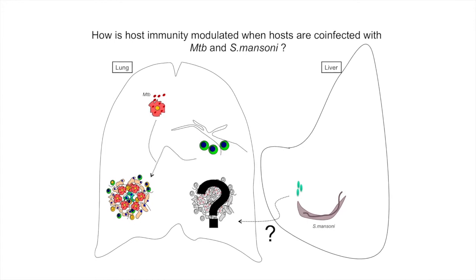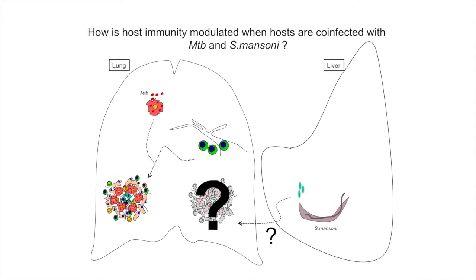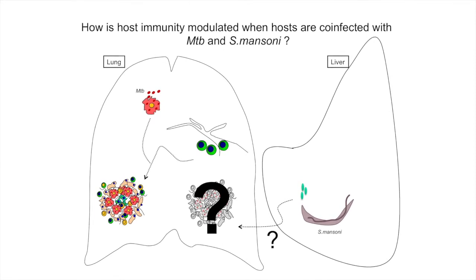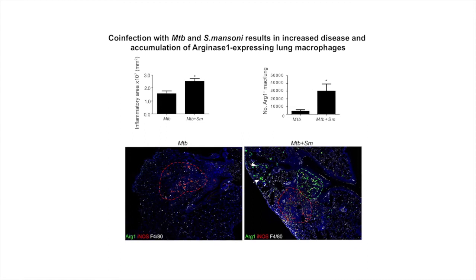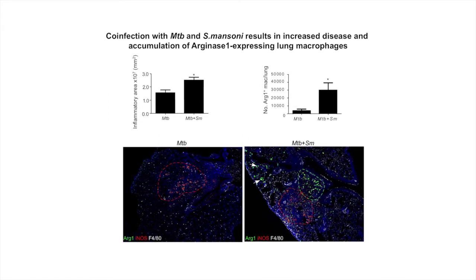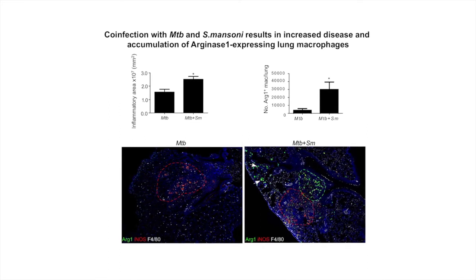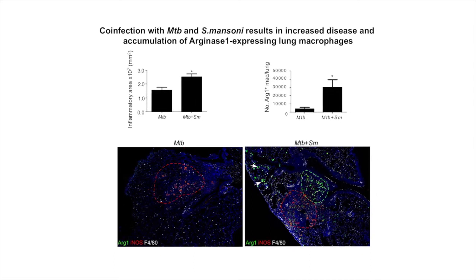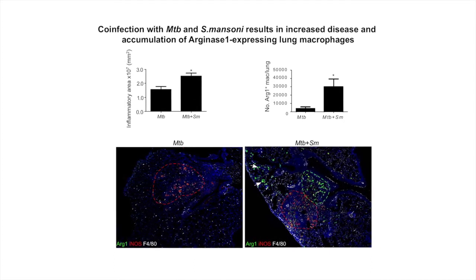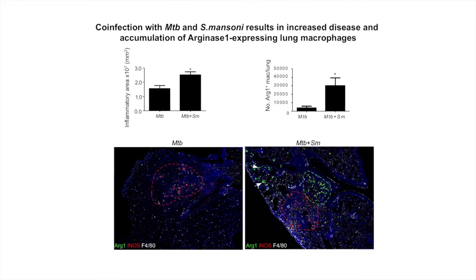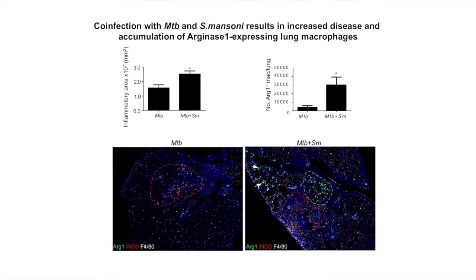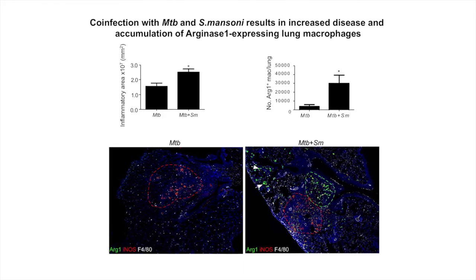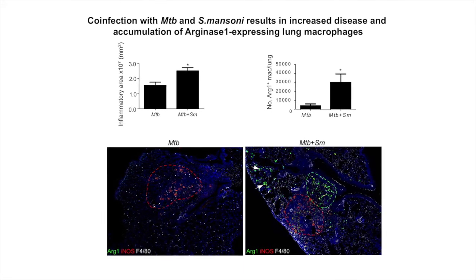To address how helminth infections modulate immunity to tuberculosis, we first infected mice with Schistosoma mansoni followed by infection with mycobacterium tuberculosis. We observed that mice co-infected with both tuberculosis and Schistosoma showed increased disease severity as reflected by the inflammatory area measured in the lungs of co-infected mice. We also observed that the increased inflammation coincided with accumulation of arginase-positive macrophages in the lung. These arginase-positive macrophages were present in the form of type 2 granulomas and were distinct from the type 1 granulomas induced by mycobacterium tuberculosis infection.